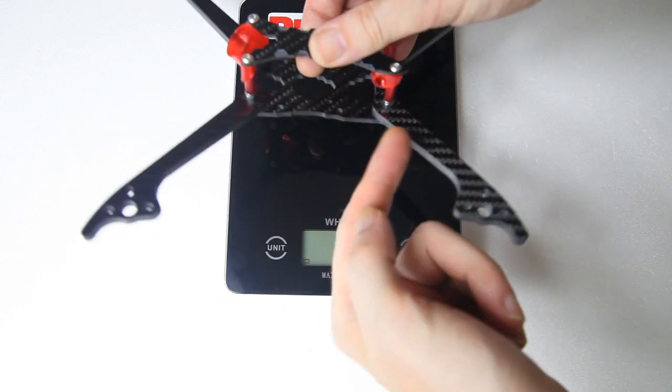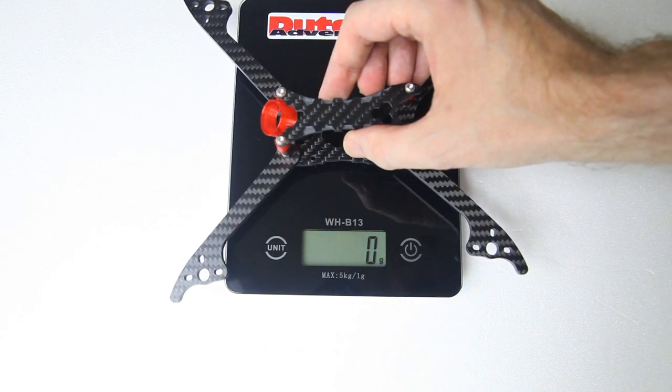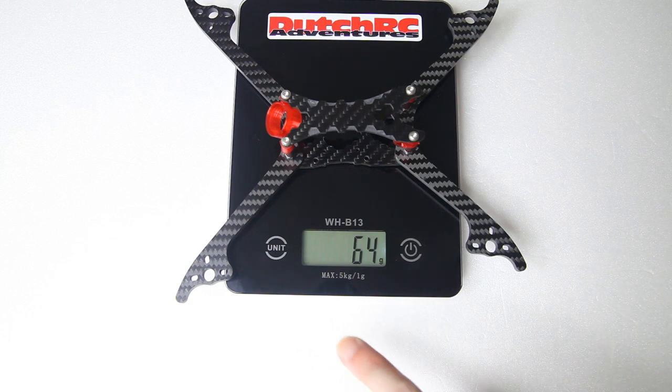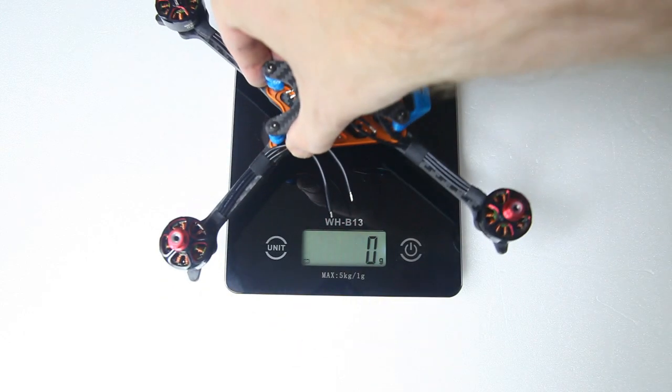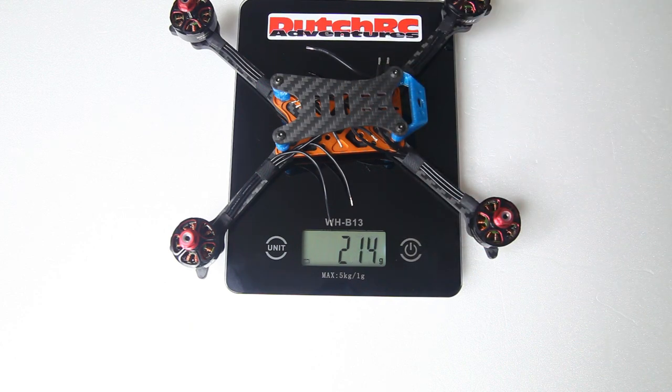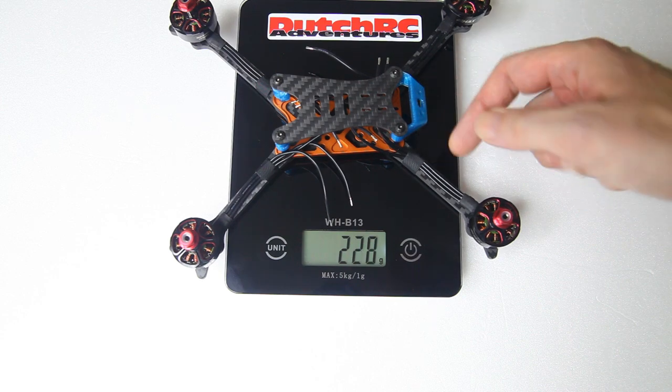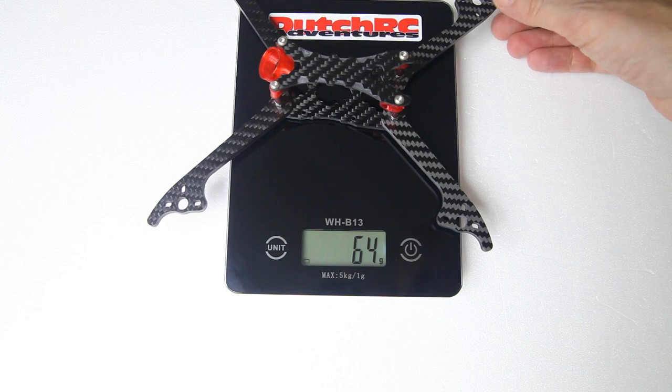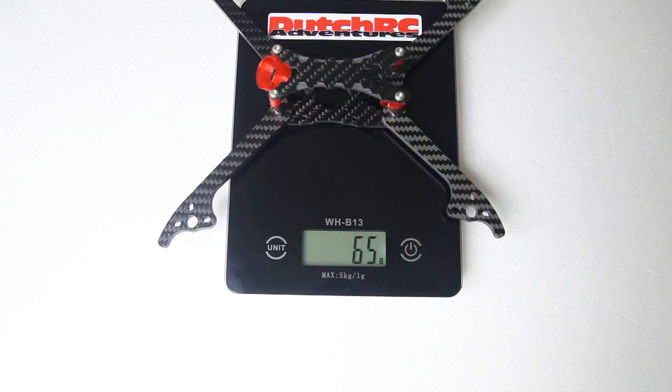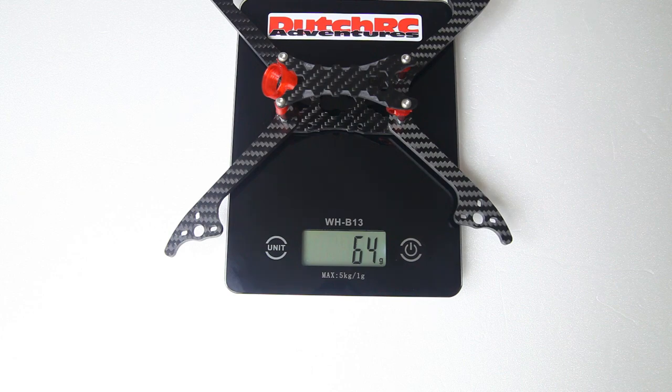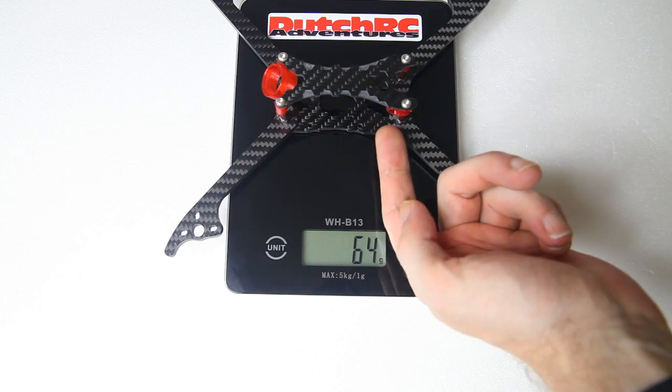With that all said and done, we obviously want to know what this frame weighs. I'm weighing this frame with antenna mount and camera mount just like the Floss 3.0. Here we go. It's not as light as I had expected, but we do save 10 grams more basically.